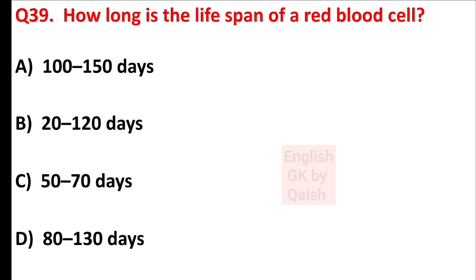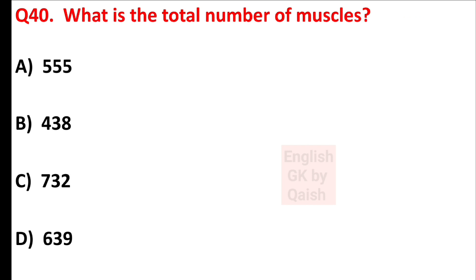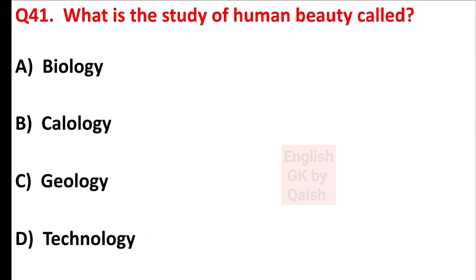How long is the life span of a red blood cell? Answer is option B — 20 to 120 days. What is the total number of muscles? Answer is option D — 639. What is the study of human beauty called? Answer is option B — kalology.